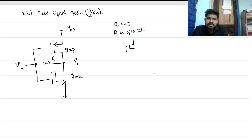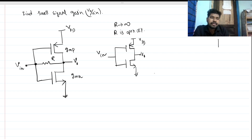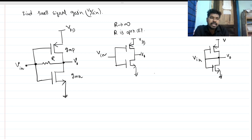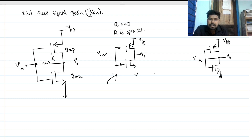So the picture will look like this. Now what is the gain of the circuit? We have both PMOS and NMOS with input at the gate, and we take the output from the drain of PMOS and NMOS.